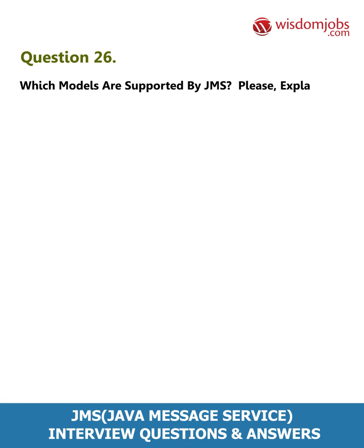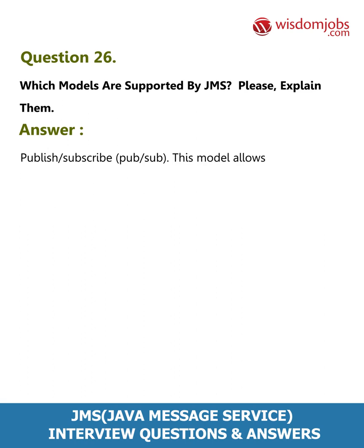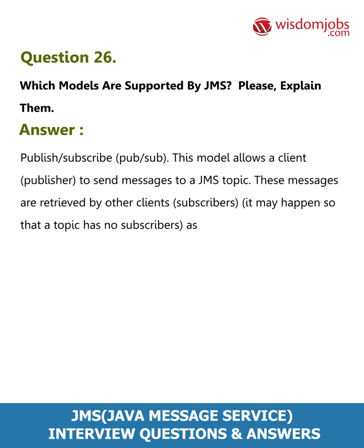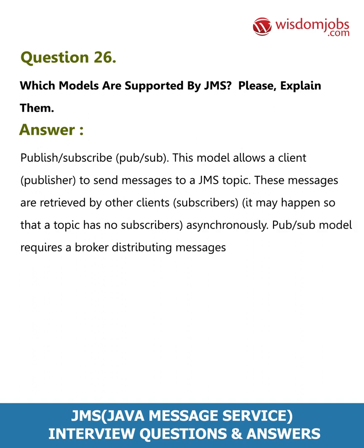Question 26: Which models are supported by JMS? Please explain them. Answer: Publish-Subscribe — this model allows a client (publisher) to send messages to a JMS topic. These messages are retrieved by other clients (subscribers). It may happen that a topic has no subscribers. The pub-sub model requires a broker distributing messages to different consumers asynchronously.